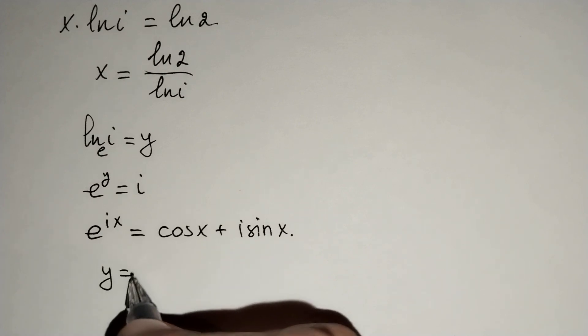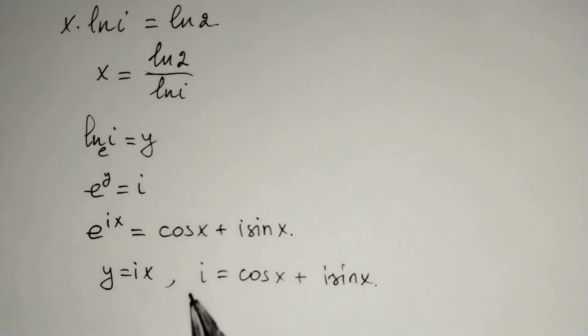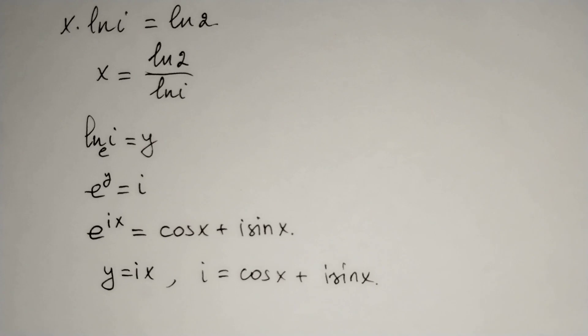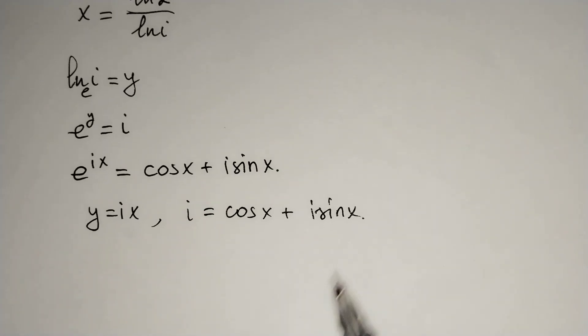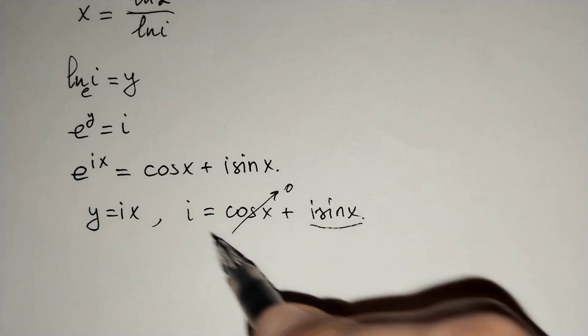y equals ix from the left side of our equations and i equals cosine x plus i sine x. You can see that the left side of our equation has no real part. That's why cosine x should equal 0 and i sine x equals i.